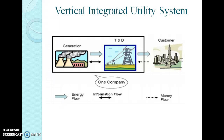The vertical integrated utility system is shown here. In that, the bold line shows the energy flow, the border line shows the information flow, and the dotted line shows the money flow. The generator power is transmitted from the generating station through the transmission and distribution system, then to the consumers. The information flows only between the generation and transmission system. The money transfer is from the consumers to the company which owns the system, and there is no information transfer between consumers and the generation or transmission system.